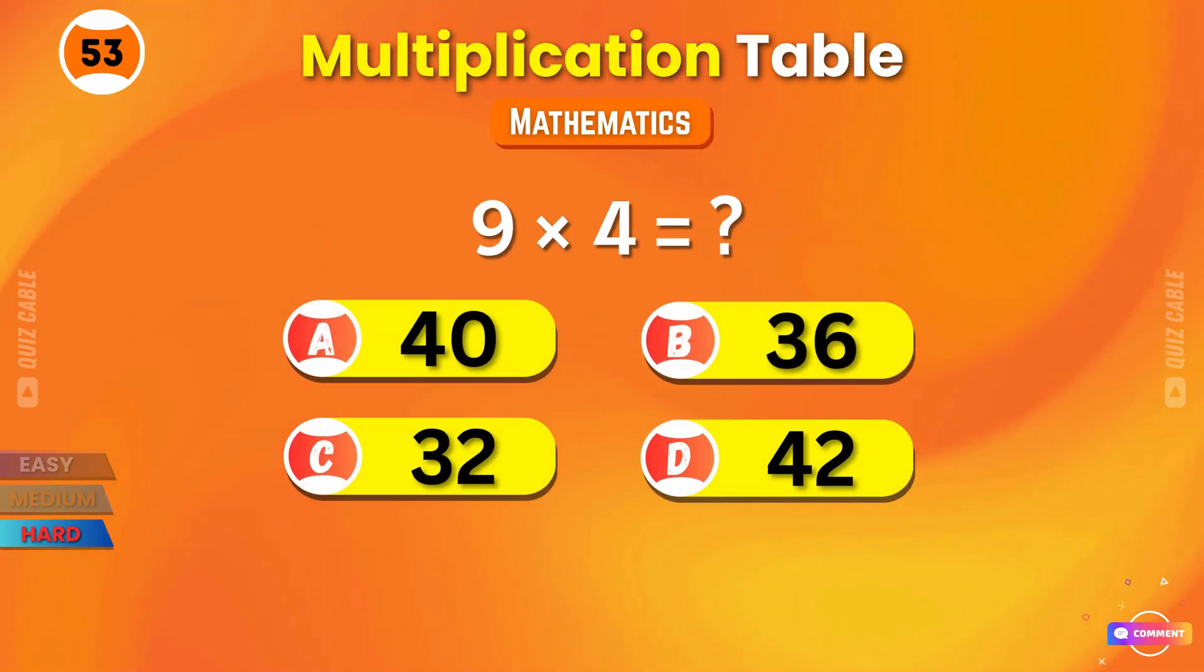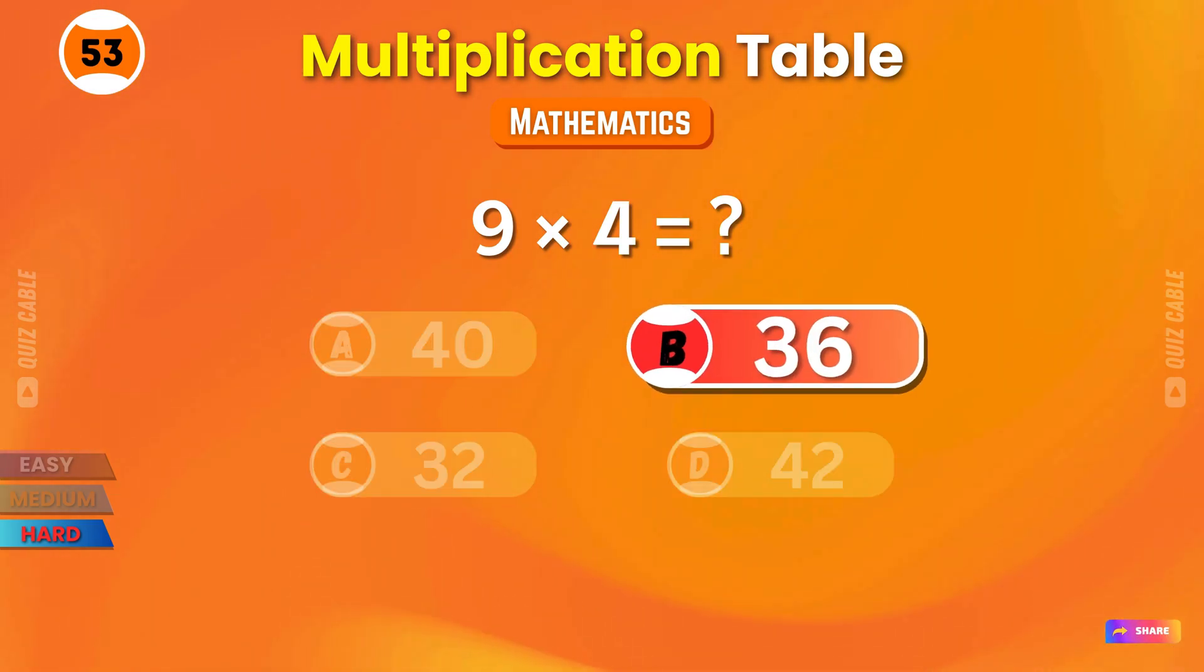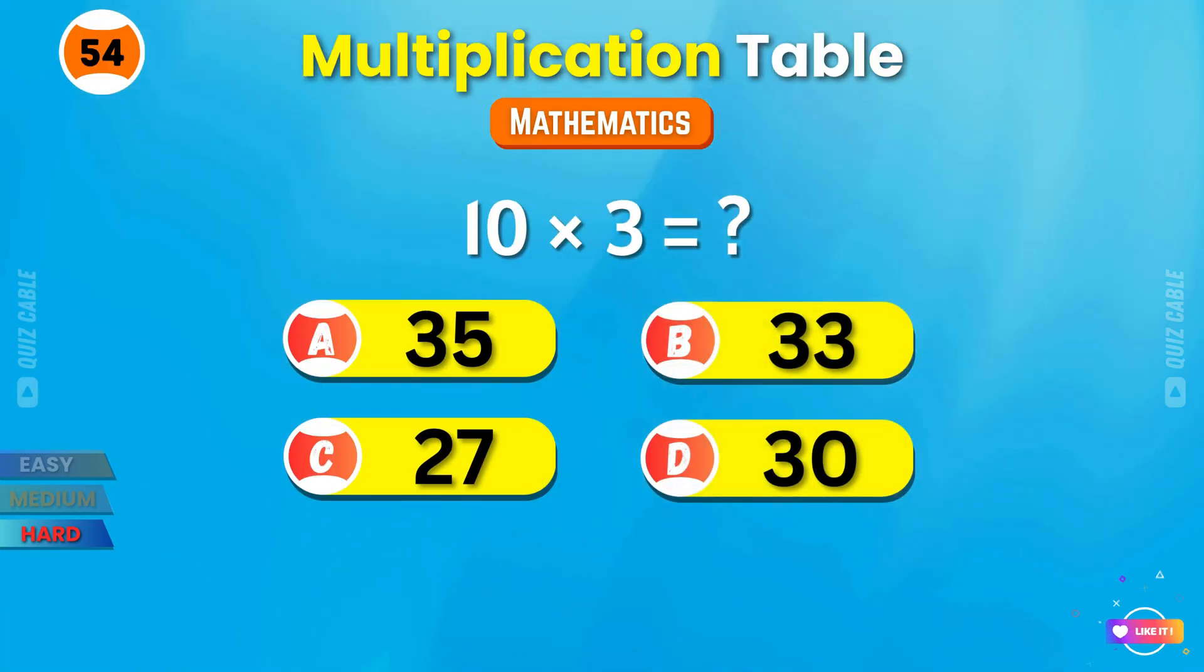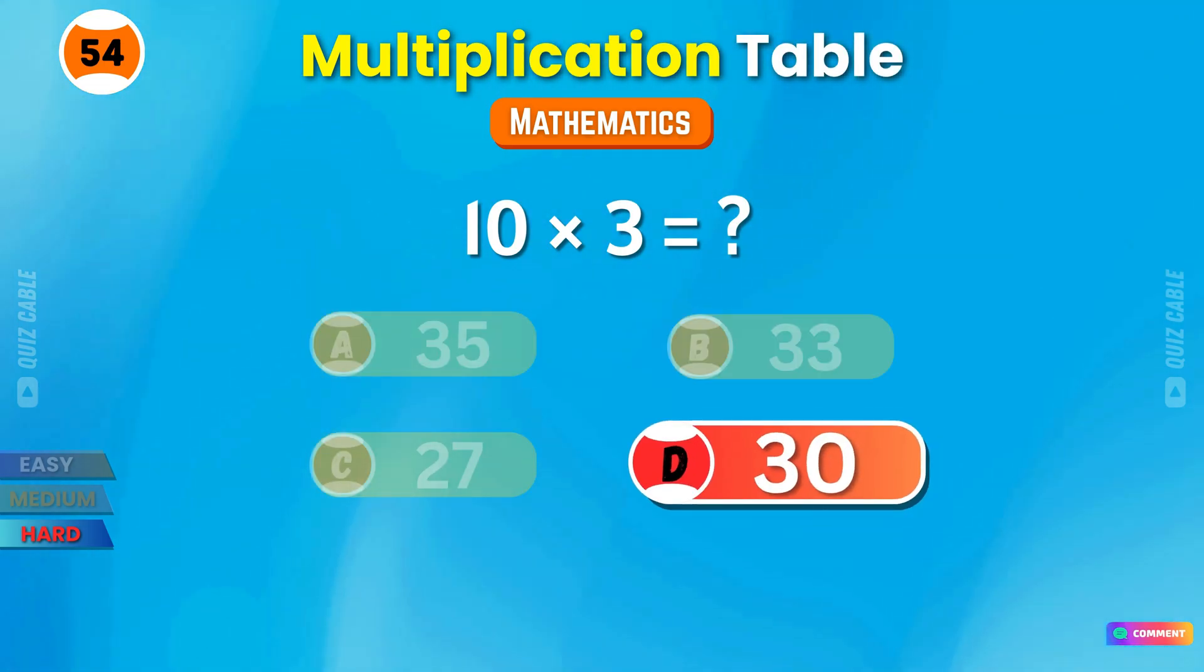9 times 4? 36. Perfect. 10 times 3? 30. Super fast.